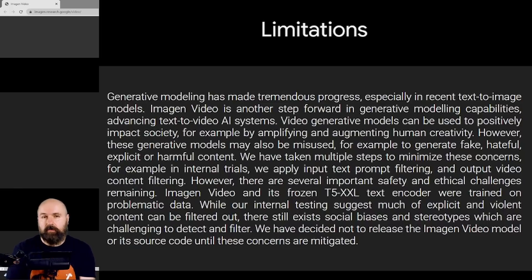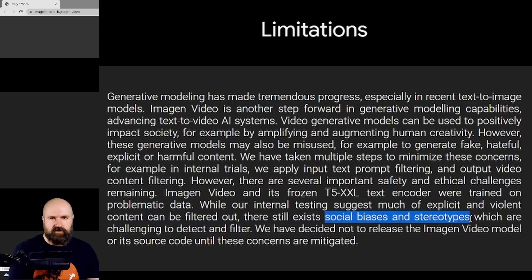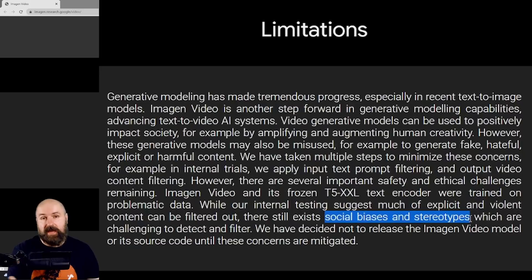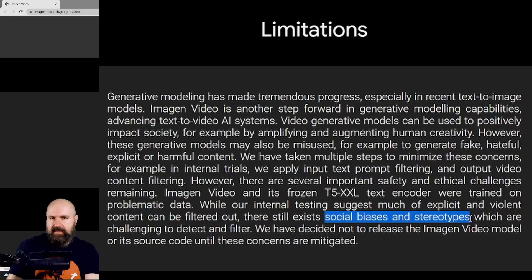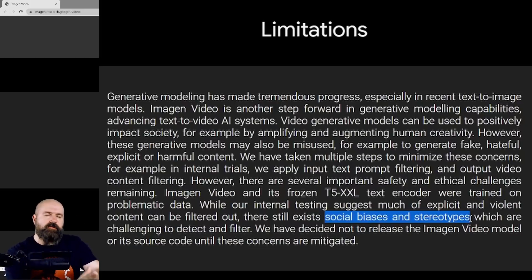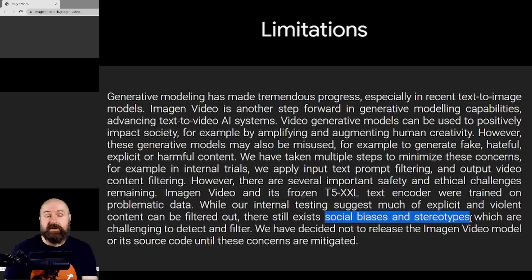They are also writing about the social bias and stereotypes that are created with these images. You have probably noticed this in the creations of Mid-Journey, Stable Diffusion, and any other image AI, because they are trained on millions of pictures and there is a bias already in those pictures — for example, how many people from different ethnicities are represented in different positions. This is a systemic problem in the amount of information used to train the AI, and it has to be tackled by trying to make the AI more neutral, so as not to take on the biases and stereotypes that already exist in our different societies and histories.